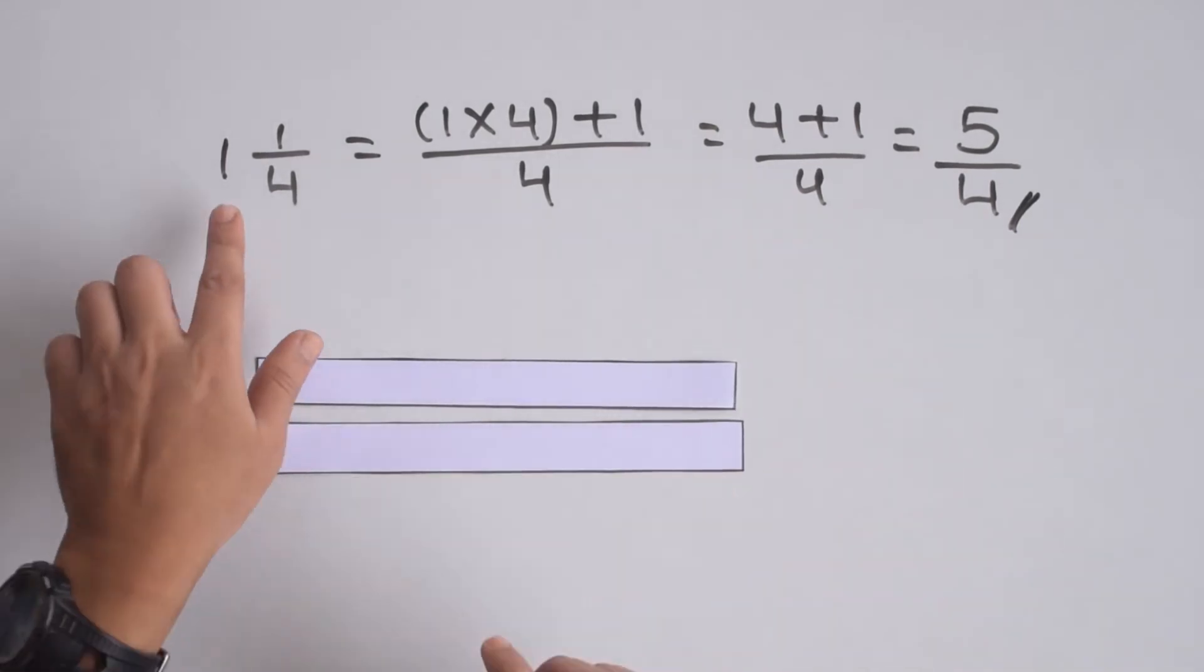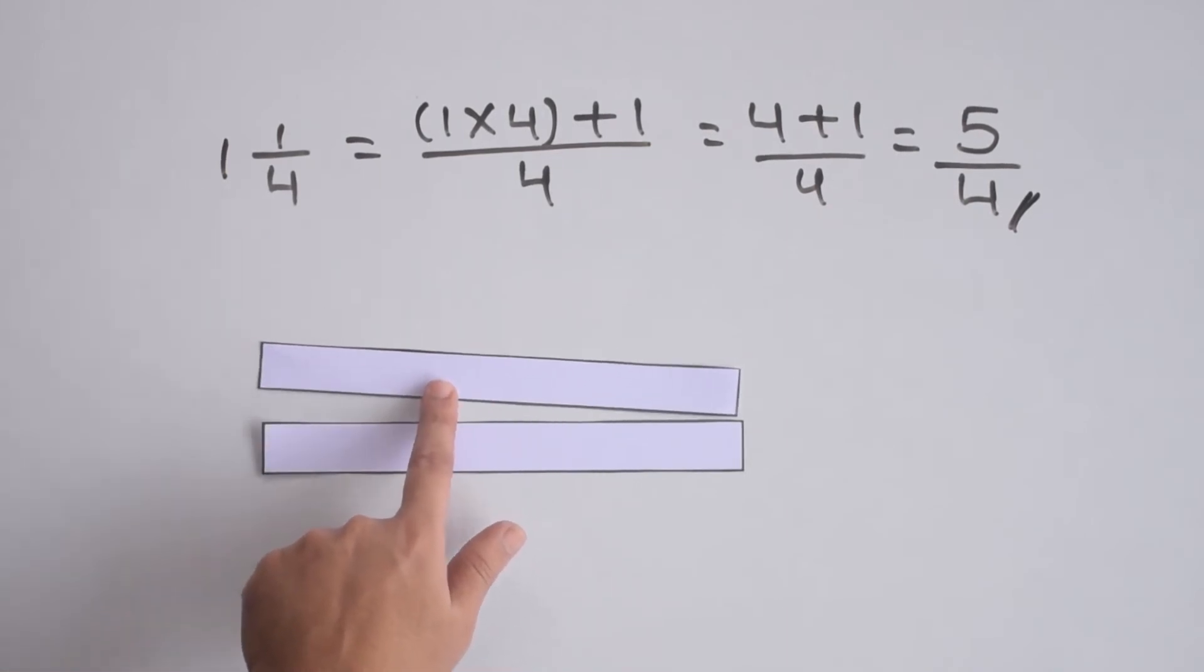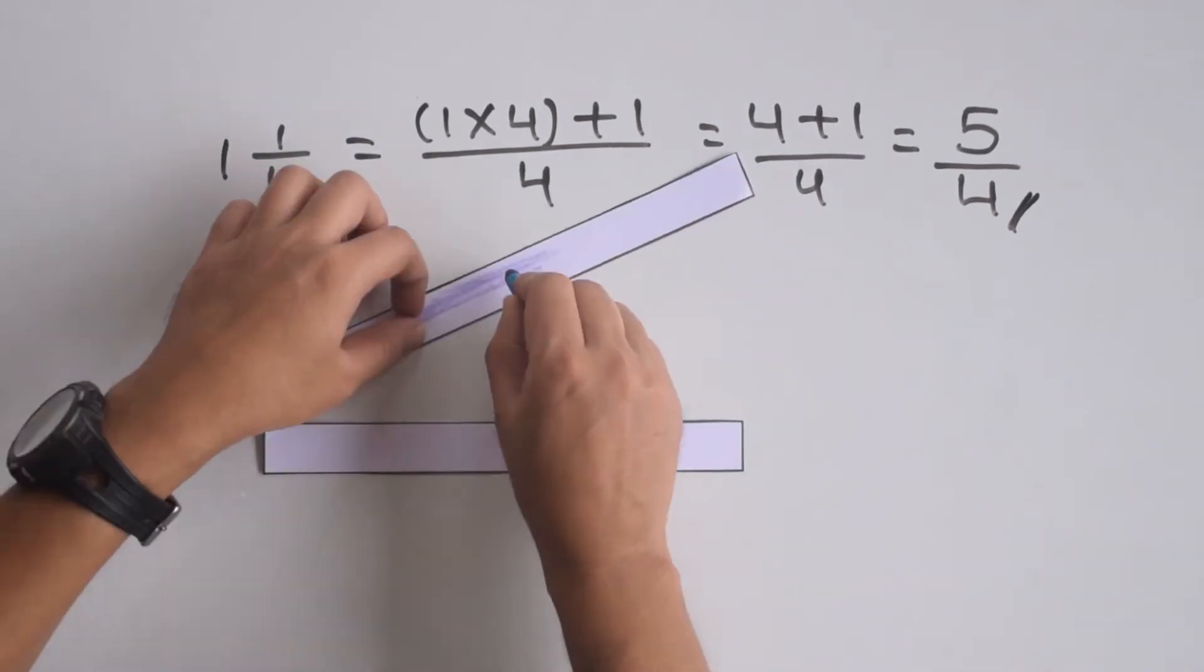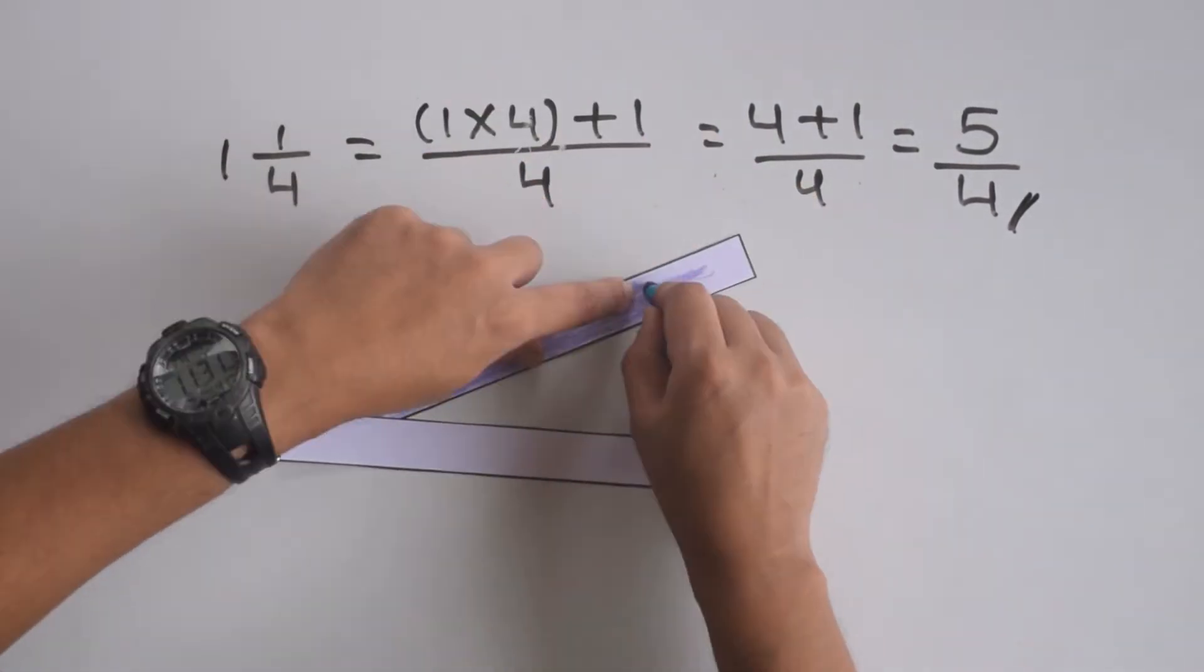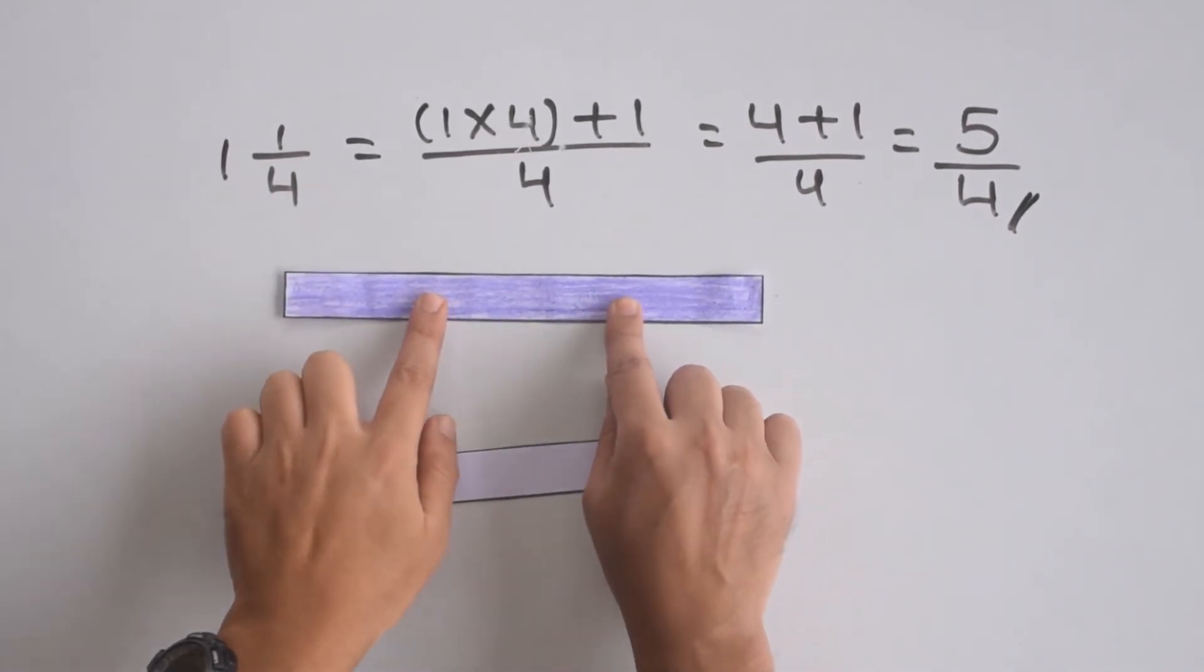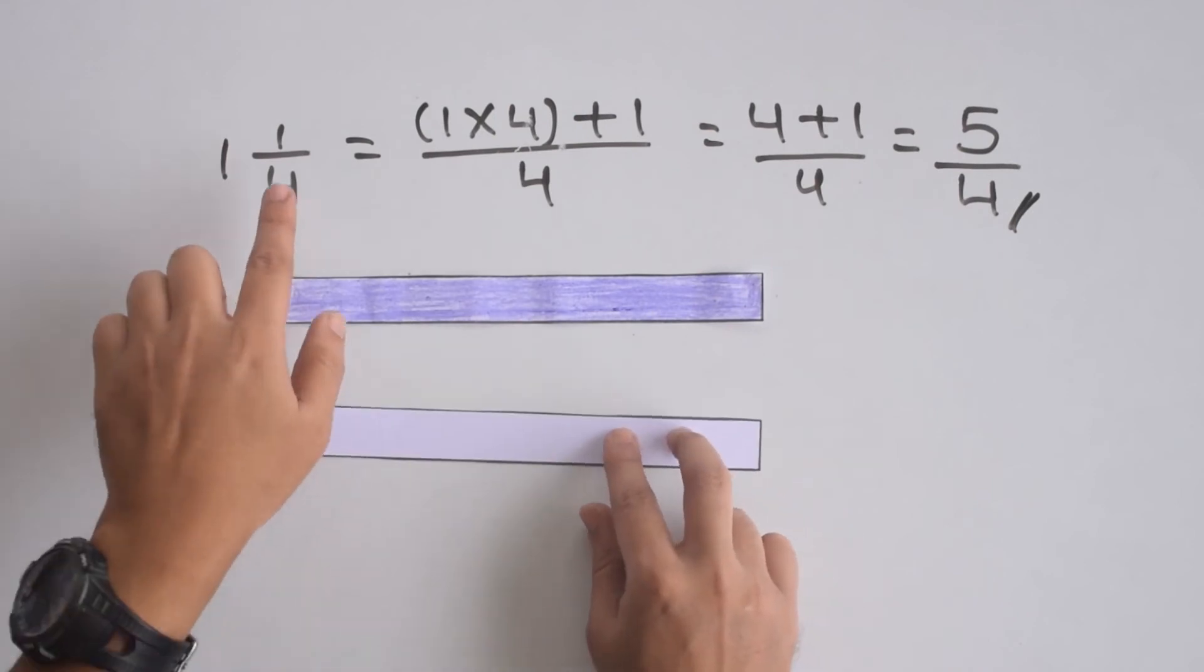Now, to represent 1 1/4, since there is one whole number here, we need one whole strip and we'll color it. We have represented the whole number 1 with this one whole strip.